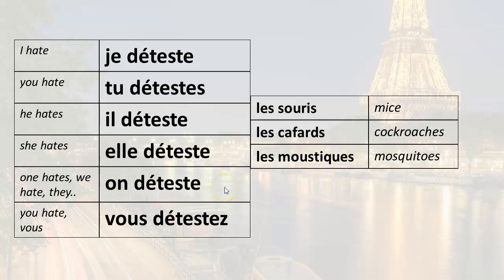We hate — on déteste. We hate mice — on déteste les souris. We hate cockroaches — on déteste les cafards. We hate mosquitoes — on déteste les moustiques.